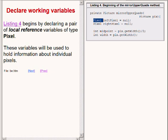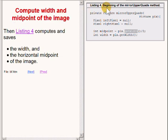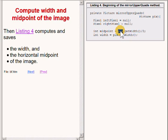Following the declaration of the two pixel variables, the code on your right calls the getWidth method on the incoming picture to get and store half the width of that picture. That value is stored in a local variable, which is a primitive variable of type int named midpoint.